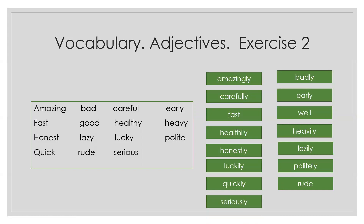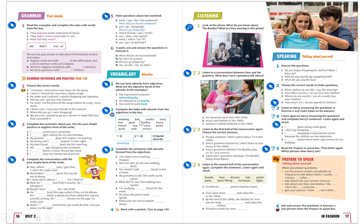Polite becomes politely, quick becomes quickly. Rude — rude is an irregular adverb, nothing was done to it, it remains the same. Seriously ends with -ly. So our irregular adverbs are: early, fast, well, and rude. The answers are: badly, carefully, early, fast, well, healthily, heavily, honestly, lazily, luckily, politely, quickly, rude, seriously.